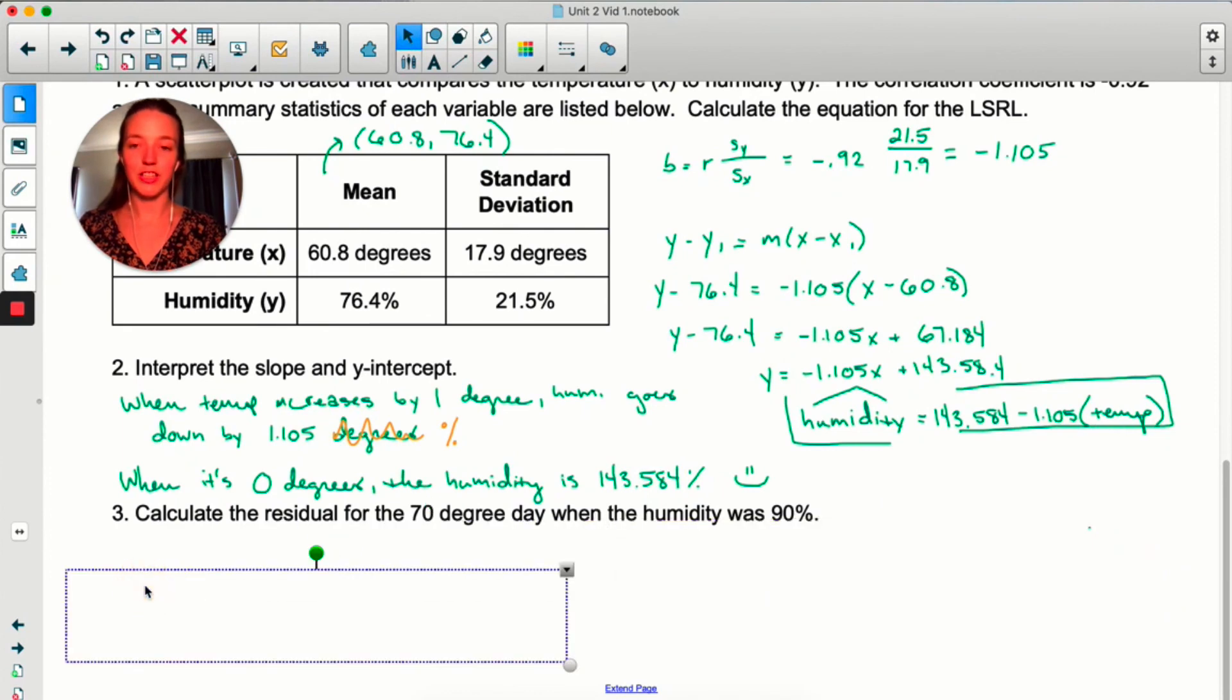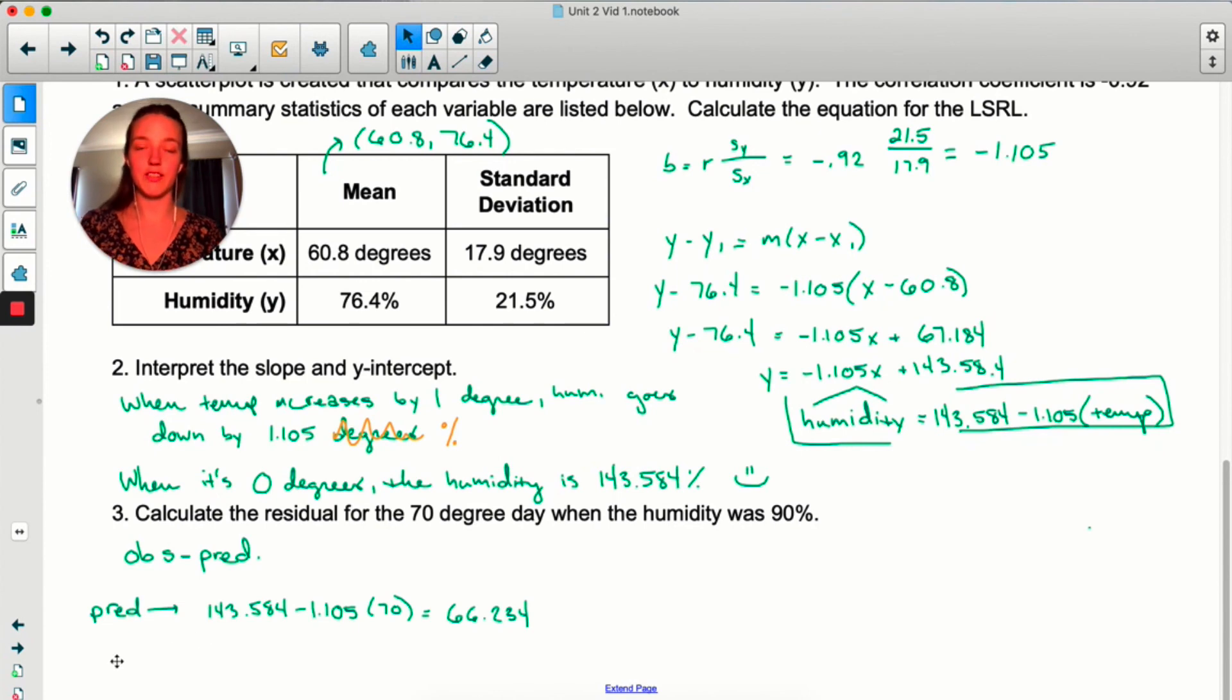Calculate the residual for the 70 degree day when humidity was 90%. So, a residual is the observed value minus the predicted value. So, the first thing we have to do is figure out what this predicted value is. They gave us 70 degrees as our x variable. So, all we're doing is plugging in 70 to our equation. And then this is the predicted value for a 70 degree day. Now, we can just do observed minus predicted. So, the actual observed humidity was 90%. So, we're going to do 90% minus the predicted value, which was the 66. And here's our residual. Your version says interpret, my typo, I forgot it. The interpretation of the residual is just the line over or under predicted by this much. In our case, the line under predicted the humidity by 23.766%. Because it was actually 90%, the line said it was going to be 66. On this particular day, the humidity was actually much higher than the line predicted.